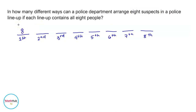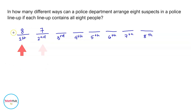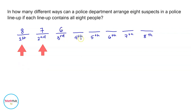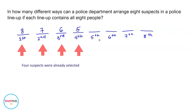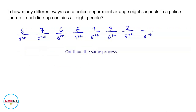For the second spot, since one suspect was already selected, we have seven choices. Two suspects already placed gives us six choices for the third spot. For the fourth spot we have five, for the fifth spot we have four, for the sixth spot we have three, for the seventh we have two, and the last will be one.